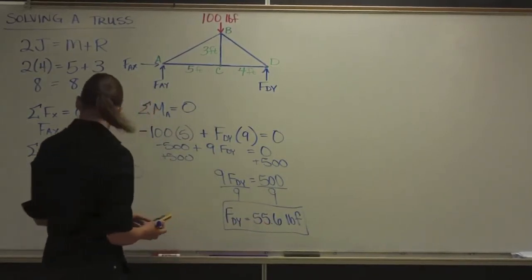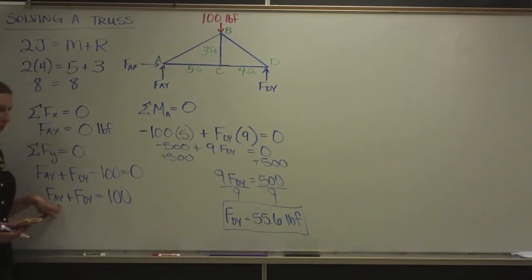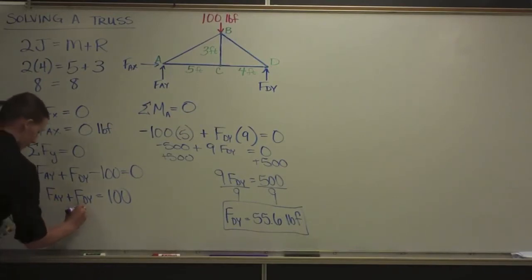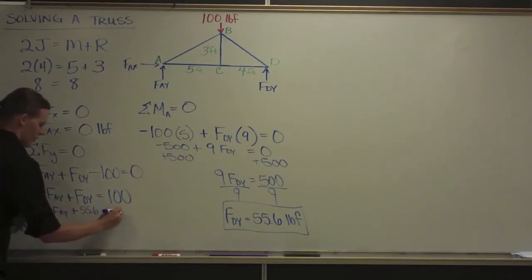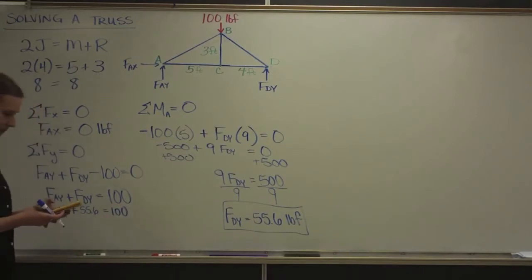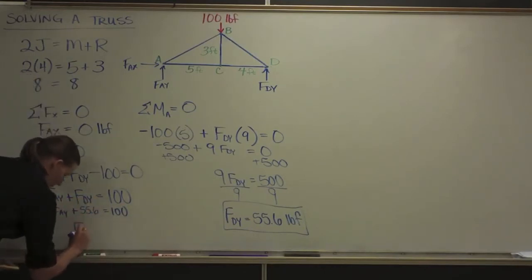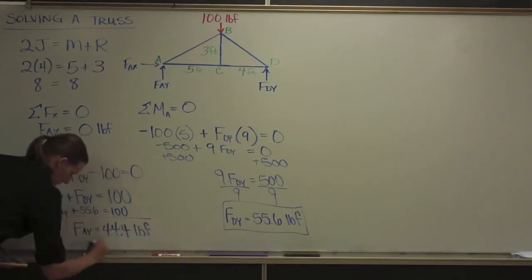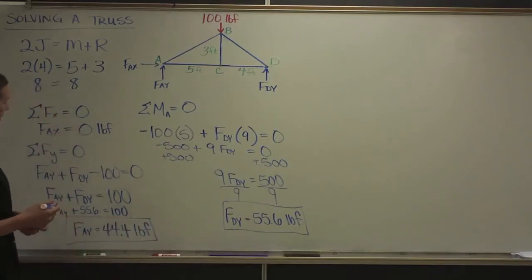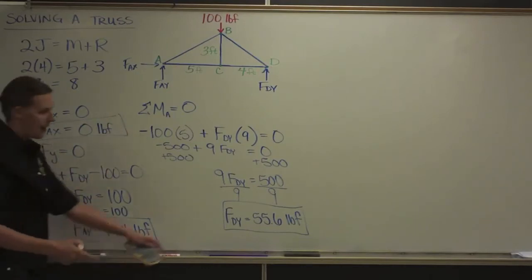Now that I know F-D-Y, I can go back and substitute it into the Y-direction equation to find F-A-Y. Since F-A-Y plus 55.6 equals 100, subtracting 55.6 from 100 gives F-A-Y equals 44.4 pounds of force. So those are our three external reaction forces: F-A-X equals 0, F-A-Y equals 44.4, and F-D-Y equals 55.6.